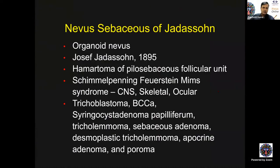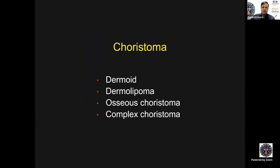Nevus sebaceous of Jadassohn is also called organoid nevus syndrome, described by Joseph Jadassohn in 1895. It includes hamartoma of pilosebaceous follicular units. The key message is: any patient with complex choristoma — you should look for syndromic associations.